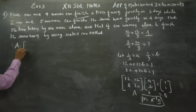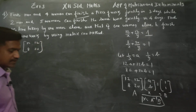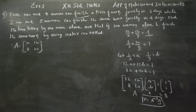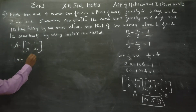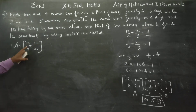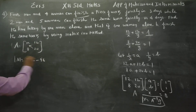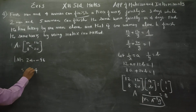What is matrix A? The A matrix is formed from the coefficients: 12, 12, 8, 20. To find A inverse, we need the determinant and the adjoint. The determinant of A equals 12 into 20 minus 8 into 12, which is 240 minus 96, giving 144.